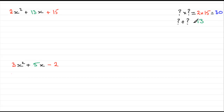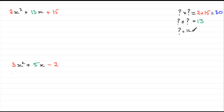So what two numbers added together make thirteen and multiply together to make thirty? Could it be six and five? Well, six and five added together make eleven, so that's no good. What about ten and three? Ten times three is thirty, and ten add three makes thirteen. So one of those numbers is ten and the other is three.